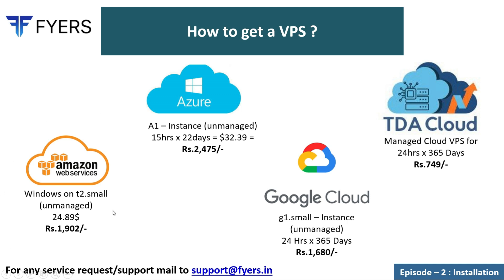If you go to Amazon, you can see T2 Small — both unmanaged and managed — available for around rupees 1,900 a month. You can also explore pay-as-you-go: for example 15 hours multiplied by 22 days comes to around 2,475 rupees. You can also check Google Cloud. Note that Amazon and Google Cloud are unmanaged — no one will help you install it; you have to read through and install it yourself.